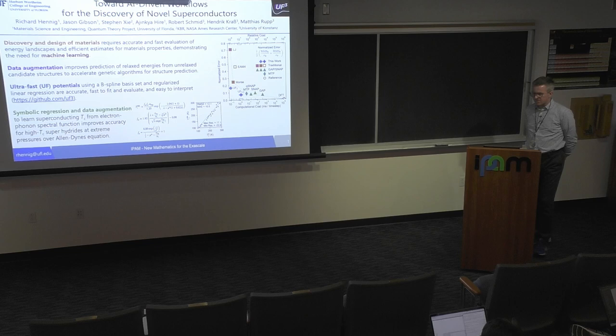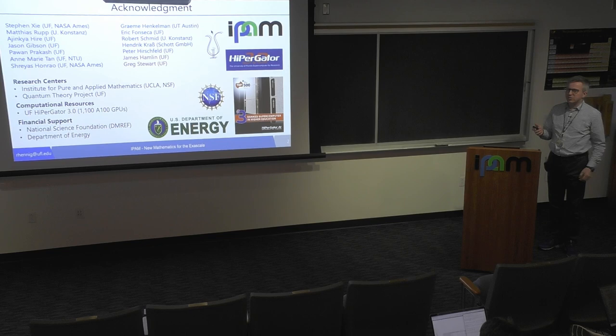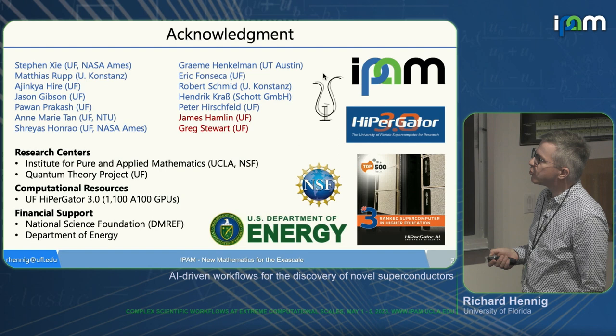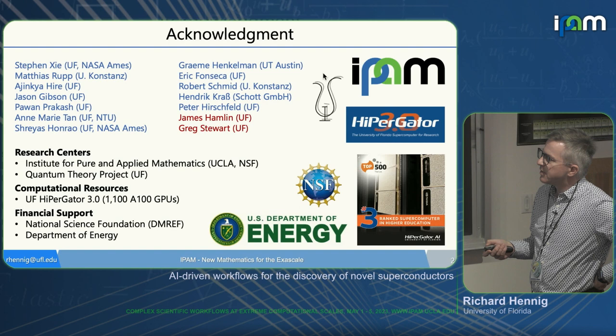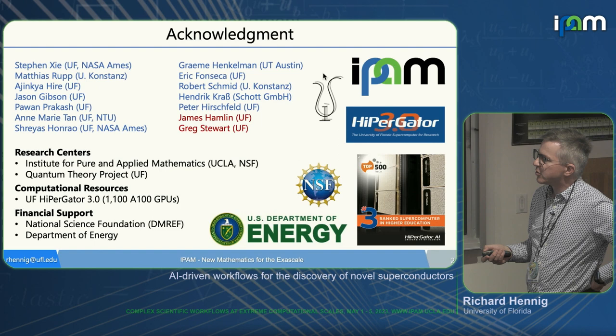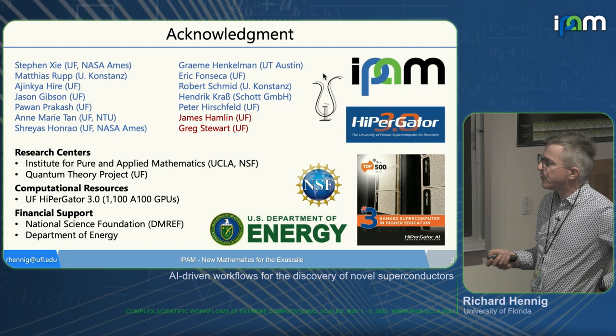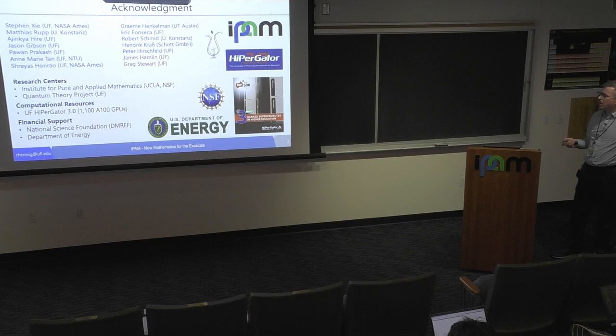Let me tell you who's been part of the work. In blue are all the theorists that have contributed in various ways. In red are our experimental superconductivity team. We've also taken extensive advantage of IPAM, as well as the quantum theory project at UF, and our computational resources. We're really lucky at the University of Florida that NVIDIA has invested heavily there and worked together with the state of Florida to build HiPerGator 3.0, our AI machine, which has 1,100 A100 GPUs. It was in the top 20 of the top 500 last year — number three ranked supercomputer in higher education worldwide. We have to thank the National Science Foundation and the Department of Energy for financial support.